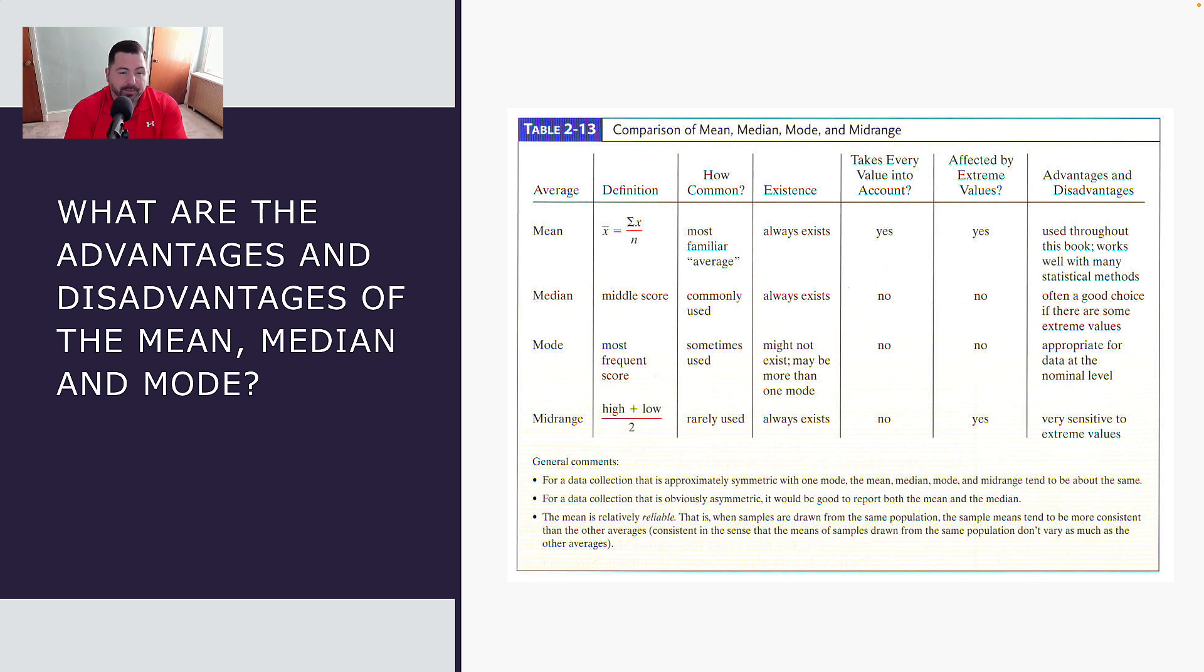The mode has its advantages when you have nominal data. So if we're using a non-parametric procedure, or if we're looking at data that is categorical in nature, and so the dependent variable of interest is not continuous, meaning it's not interval or ratio level of measurement, then using the mode for categories as the dependent variable makes a lot of sense.